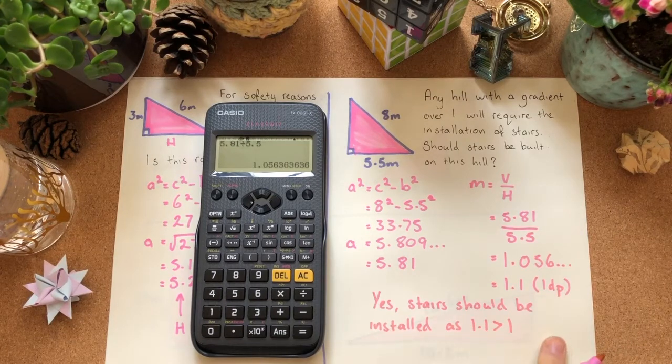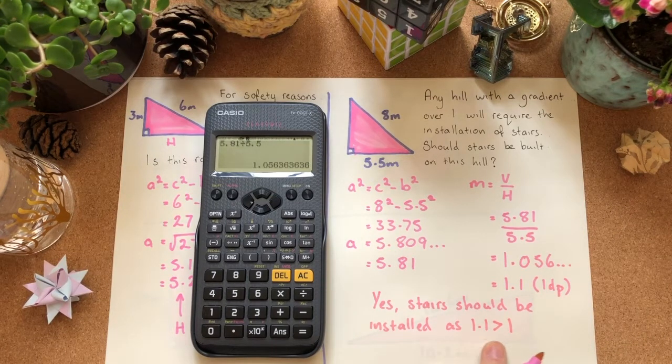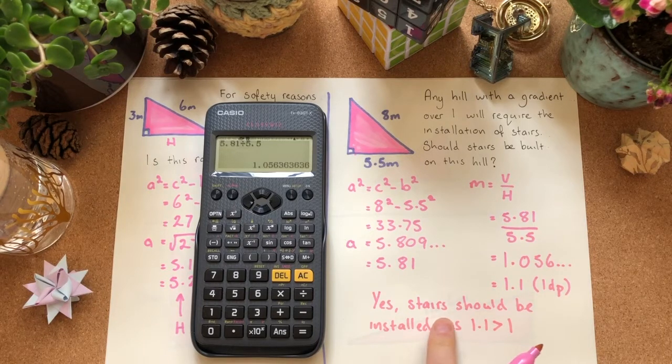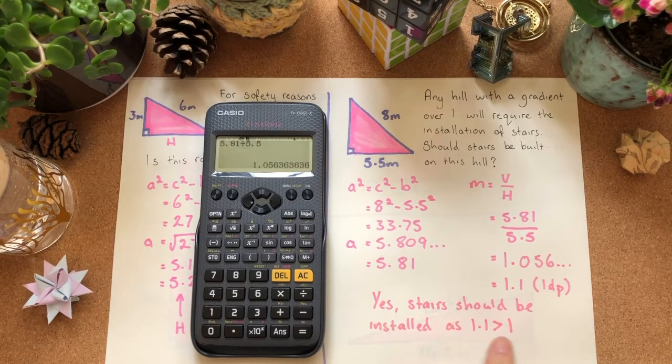Yes. Stairs should be installed as 1.1 is greater than 1. And we've got our context here, saying that stairs, and we've got our justification.